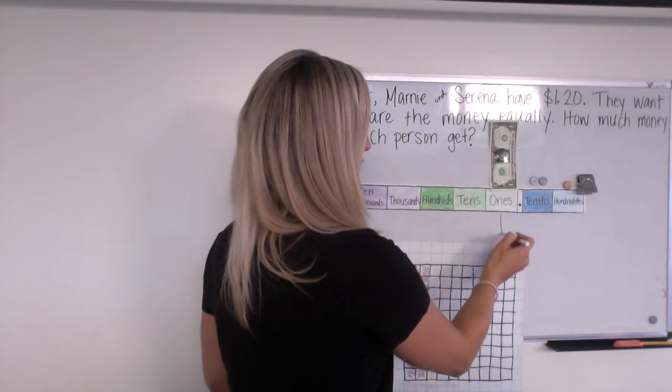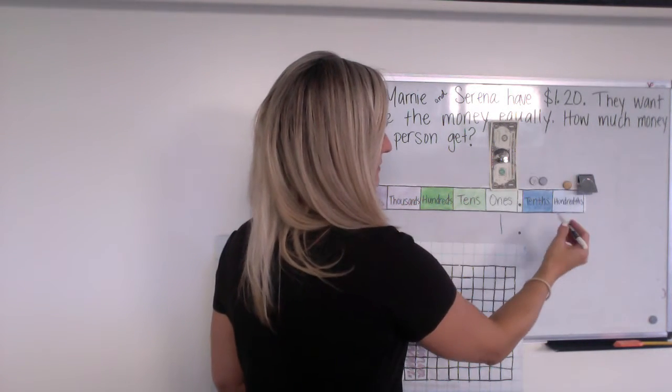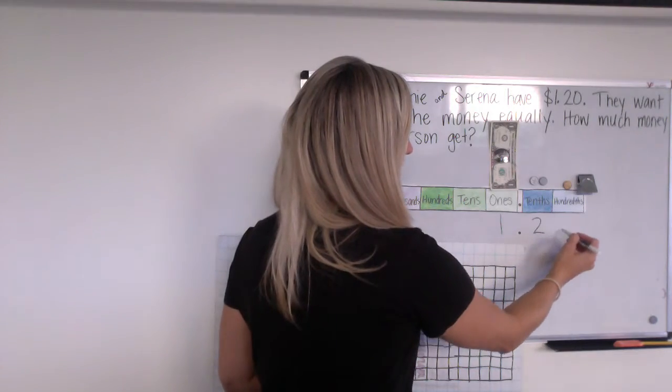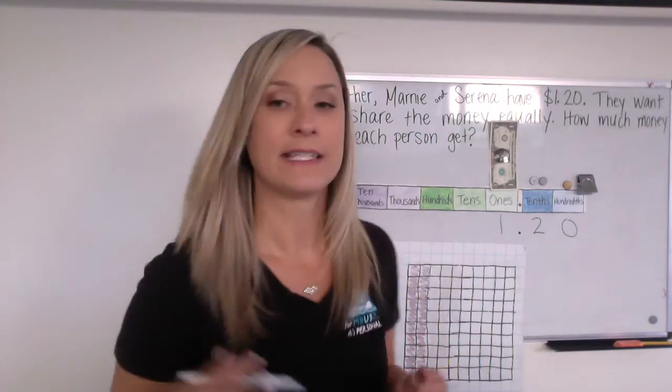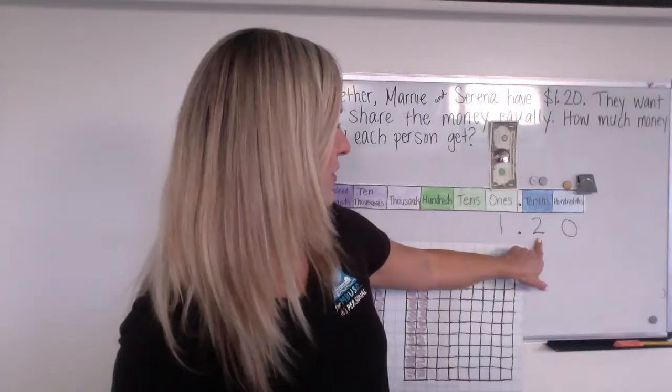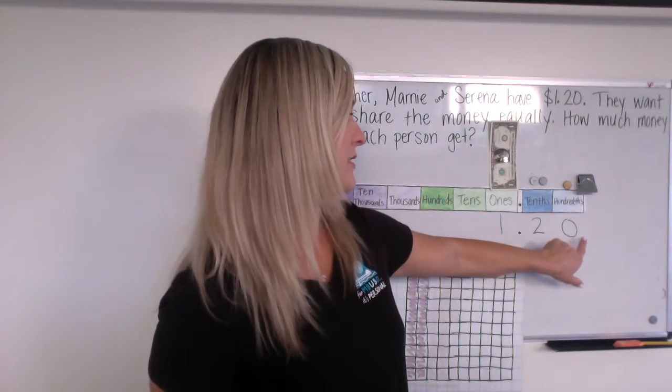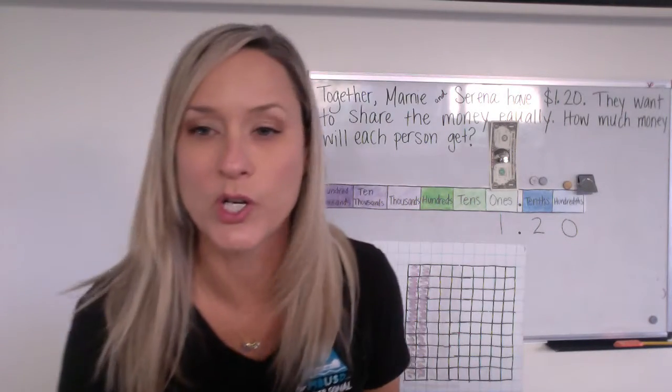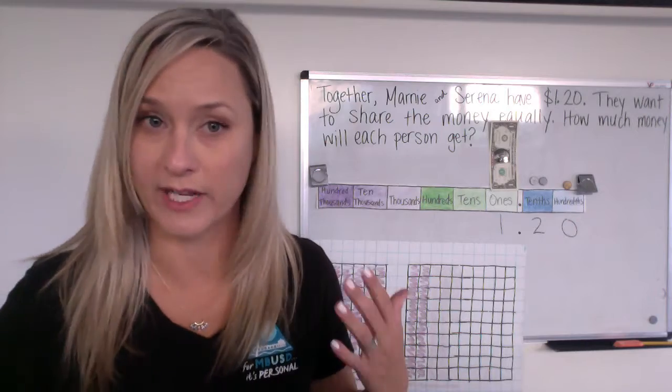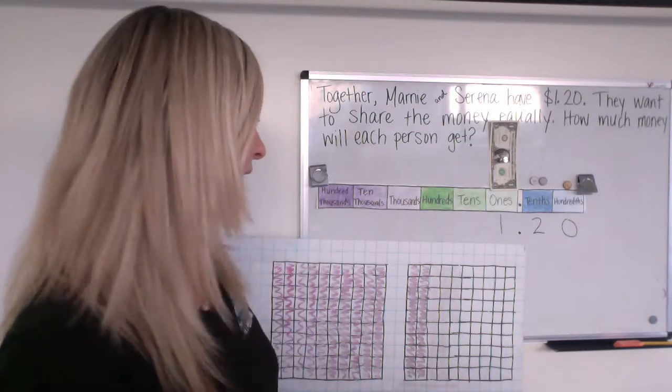So $1 and two dimes, right? So two dimes are worth 20 cents. So we would put a two there, but we also have to include the zero because they're actually worth 20 cents. So 20 out of a hundred cents, right? Okay.